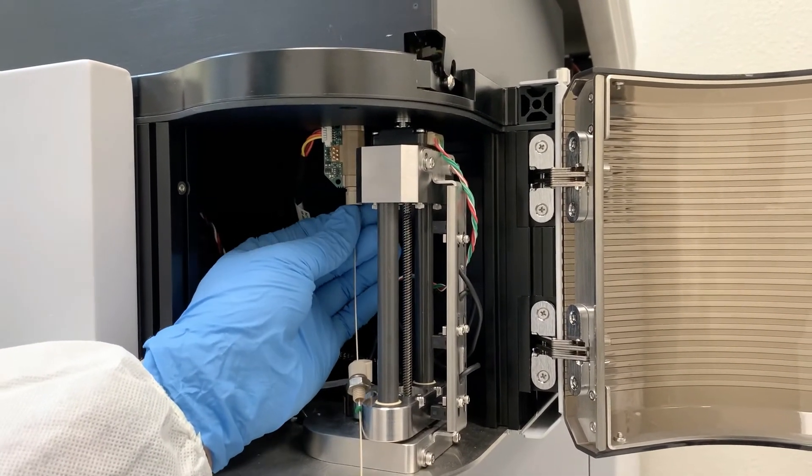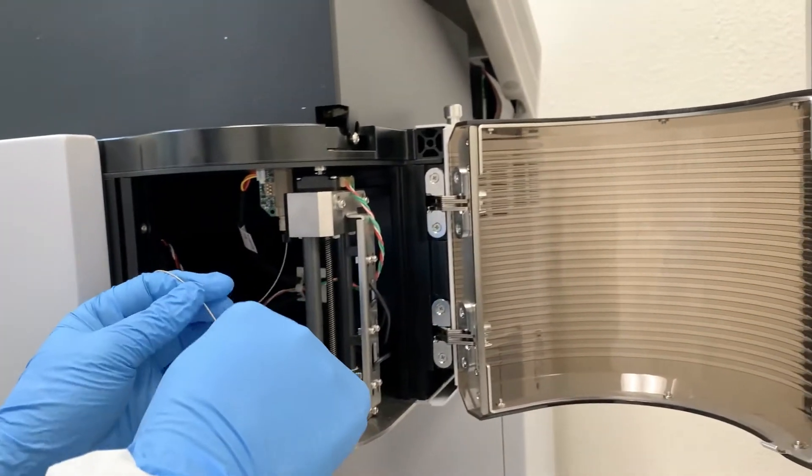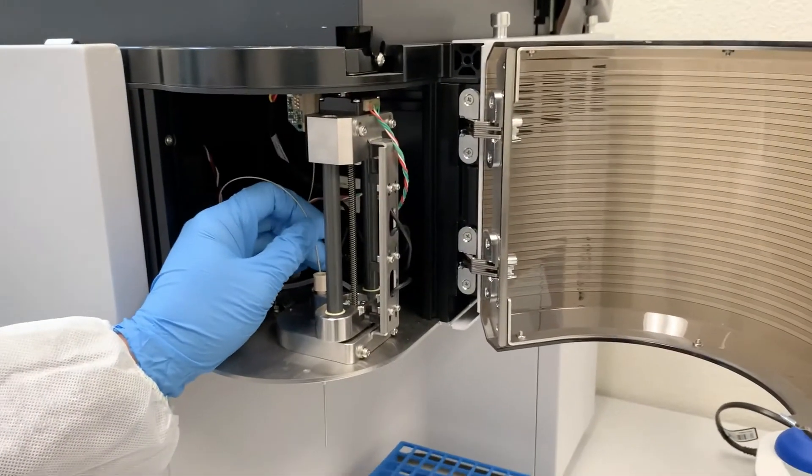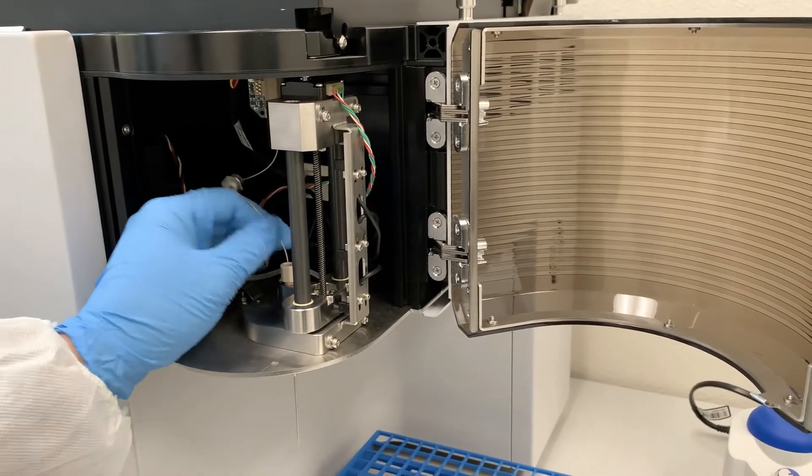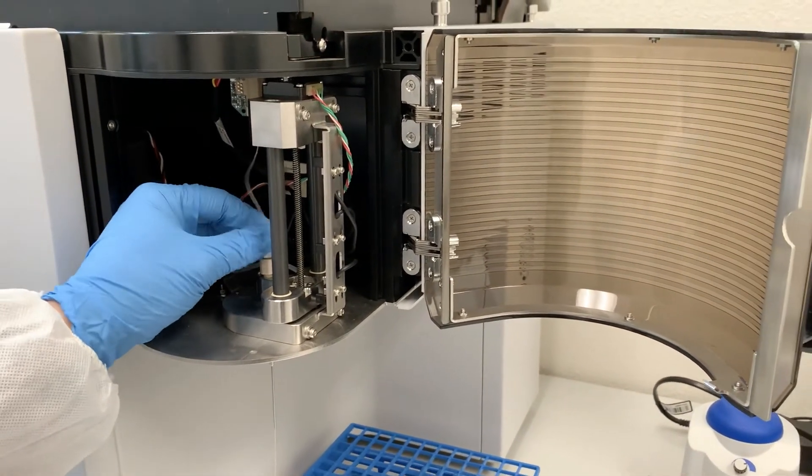Once this end is secure, grab the other end of the sample line and thread it back down through this beige nut. Once the line is all the way in, screw the beige nut into place.